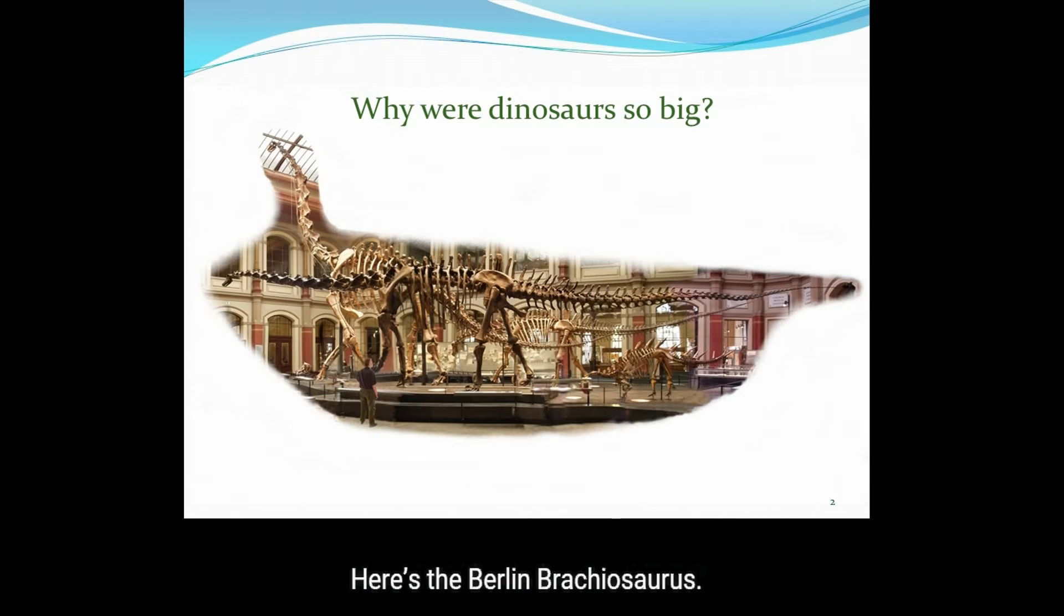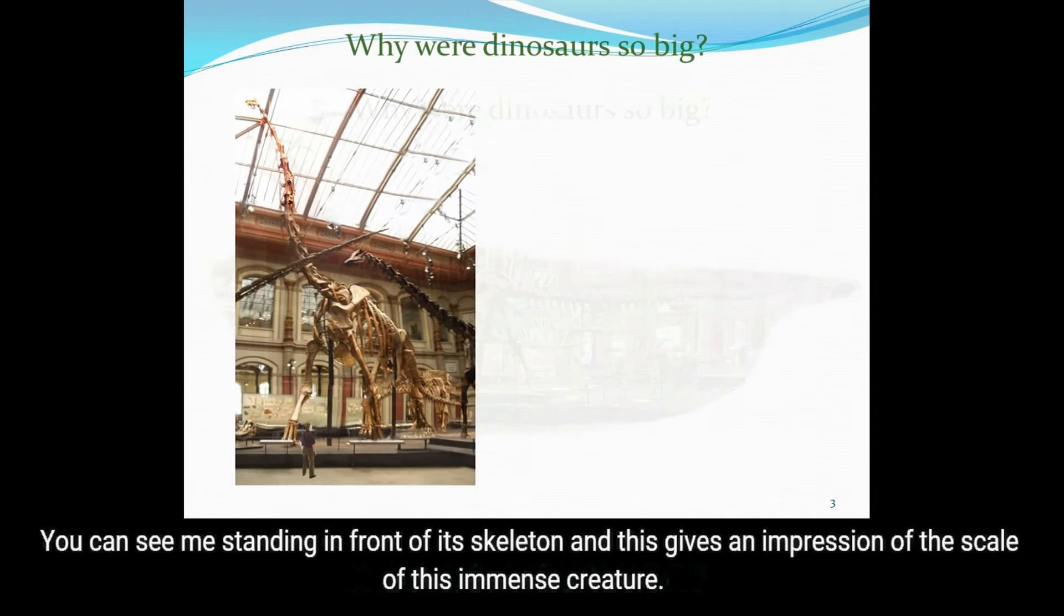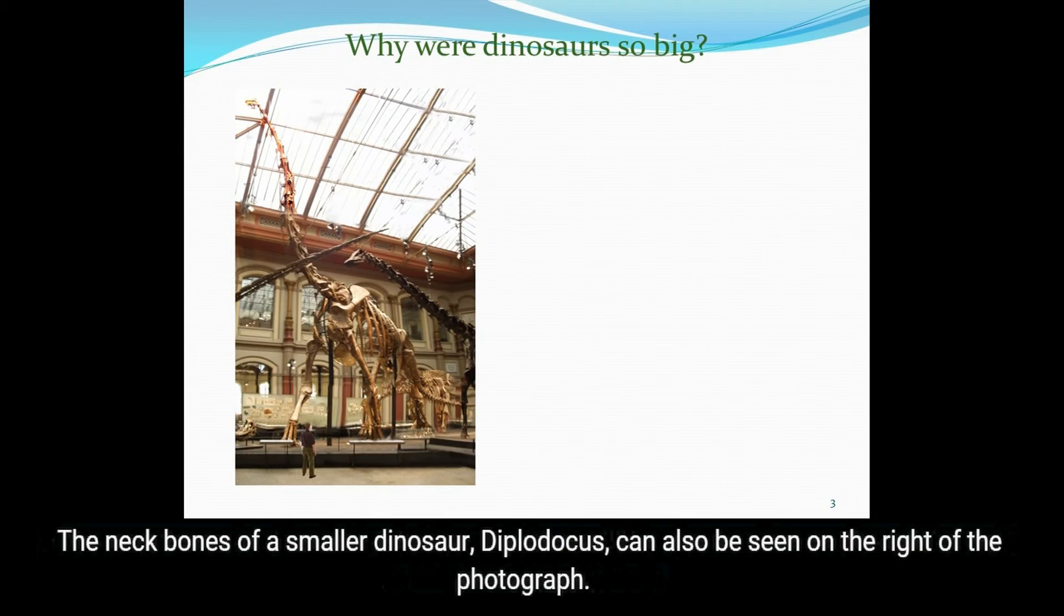Here's the Berlin Brachiosaurus. You can see me standing in front of its skeleton, and this gives an impression of the scale of this immense creature. The neck bones of a smaller dinosaur, Diplodocus, can also be seen on the right of the photograph.